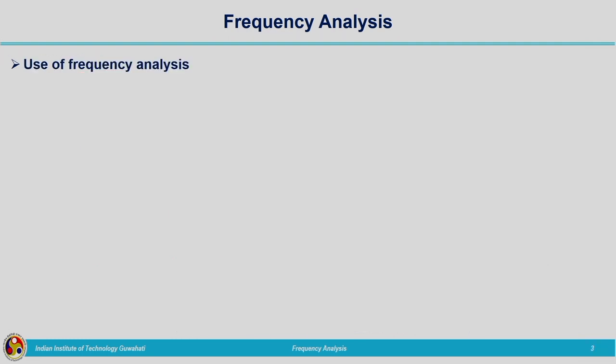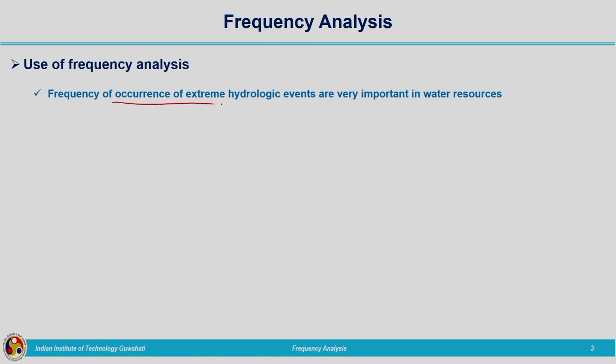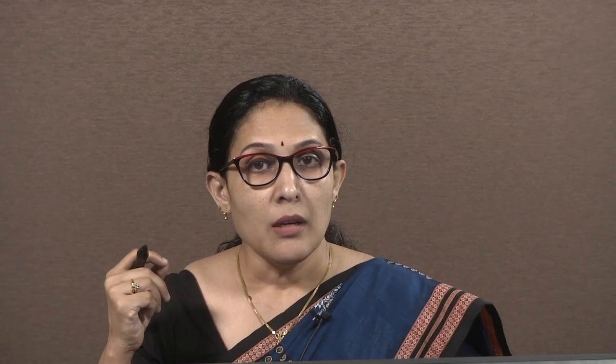When do we use frequency analysis? For water resources projects — for example, constructing a dam — the structure must be able to withstand extreme events. Frequency analysis is used to determine that extreme event. The frequency of occurrence of extreme hydrologic events is very important in water resources design of dams, bridges, culverts, and flood control structures. These hydraulic structures are designed based on the frequency of occurrence of extreme events.